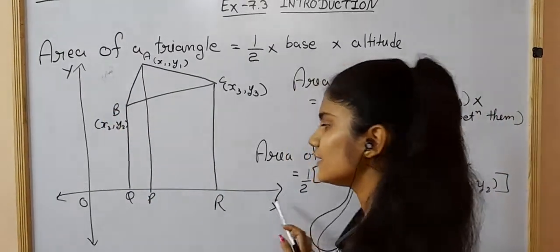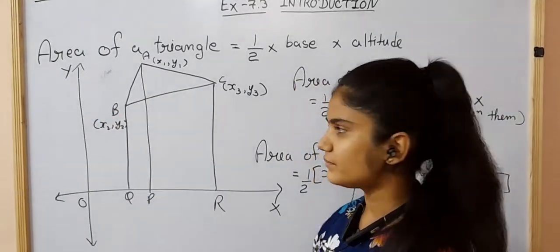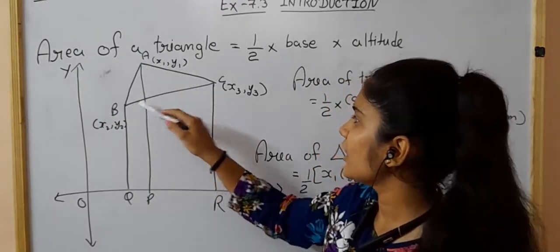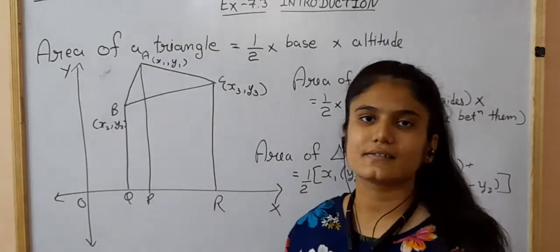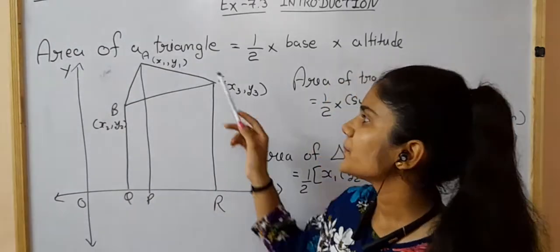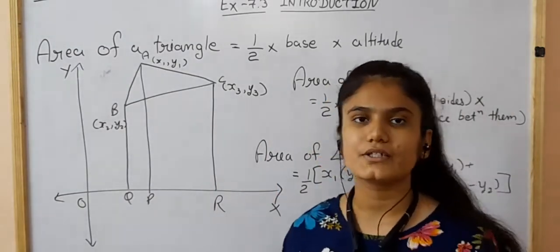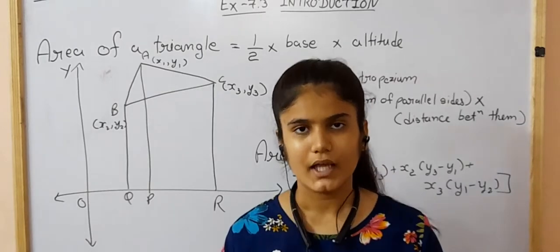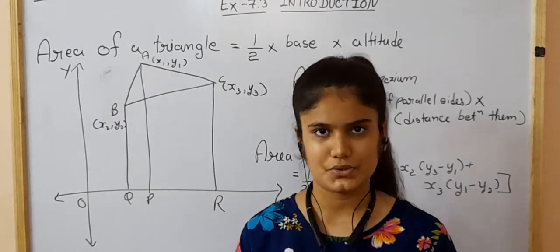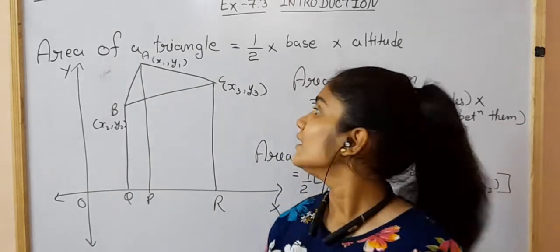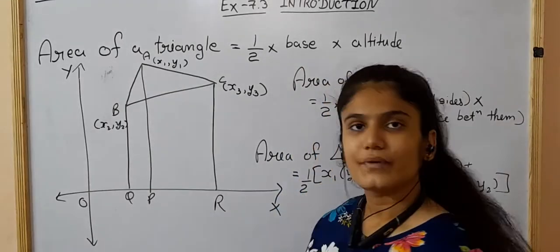We suppose that to find the area of triangle ABC, the coordinates of A are X1 and Y1, B is X2 and Y2, and C is X3 and Y3.